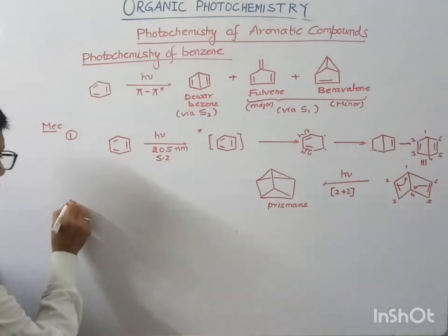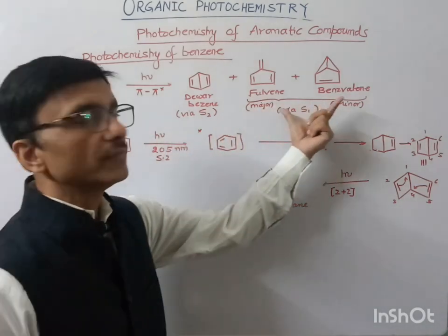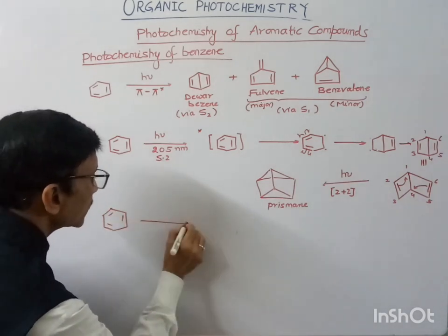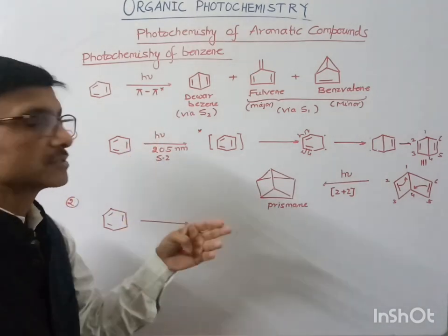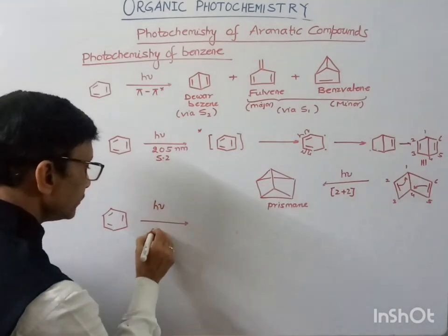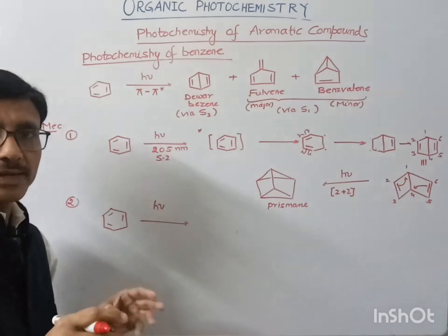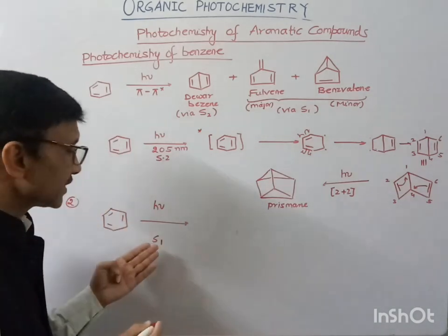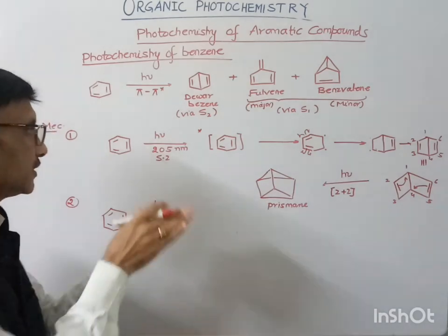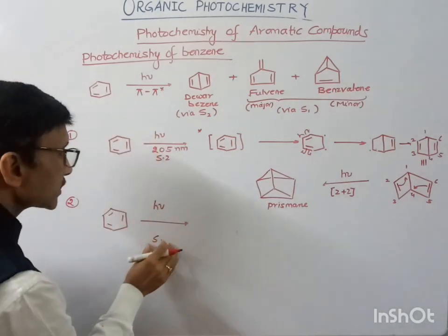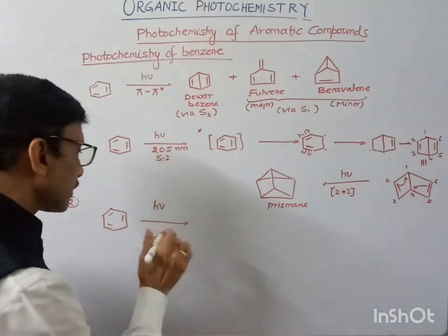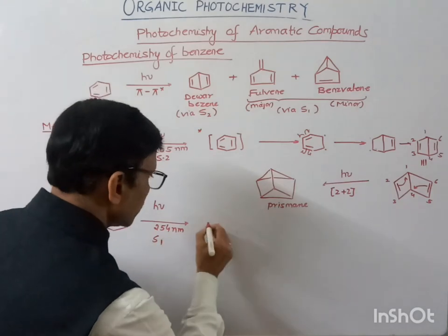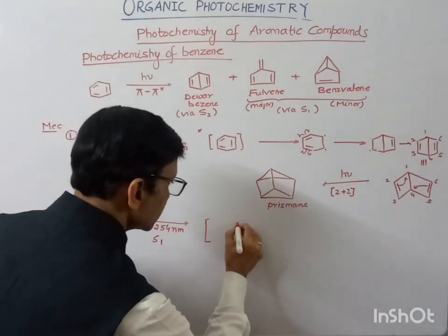Now how can we get fulvene and benzvalene? If we irradiate benzene with lower energy — that is, at 254 nanometers — it gets excited only to the S1 state, the lower excited singlet state. This is the first excited singlet state.